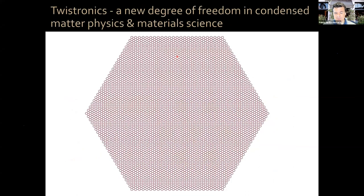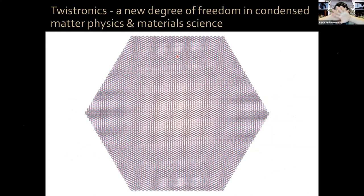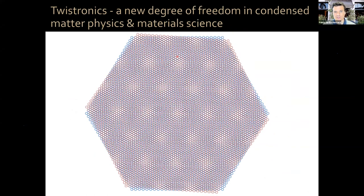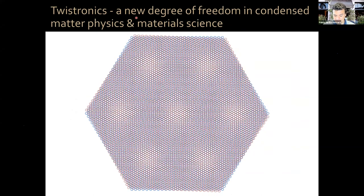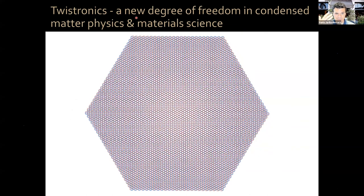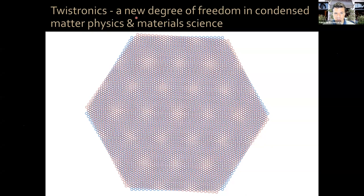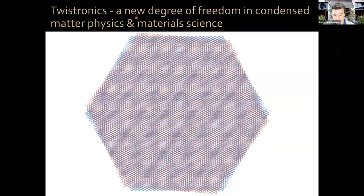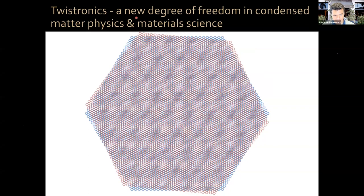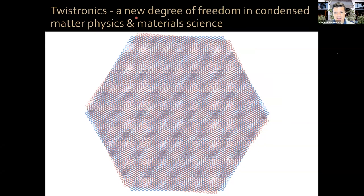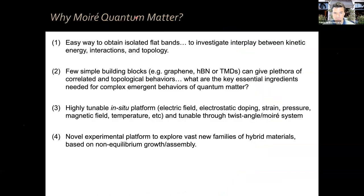The thing that initially enabled this platform was the fact that we can place two two-dimensional crystals on top of each other at an arbitrary twist angle. This is often called twistronics — a new degree of freedom in condensed matter physics and material science that did not exist before two-dimensional materials. We can really choose any angle arbitrarily between these two crystalline lattices. This is non-equilibrium assembly of matter; in particular, 1.1 degrees, as you all know, is a special angle for magic angle graphene.